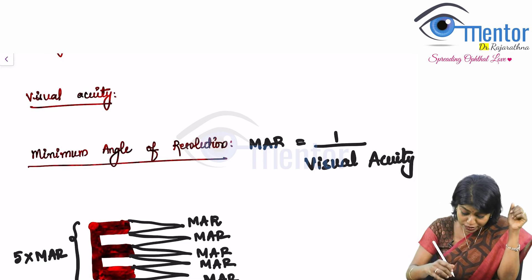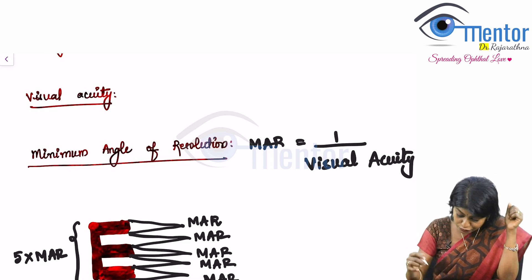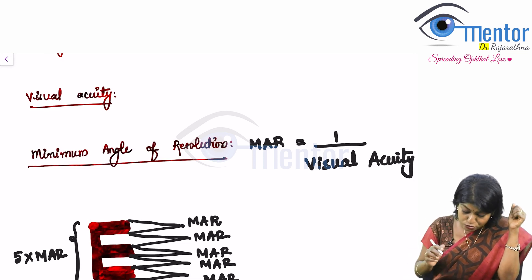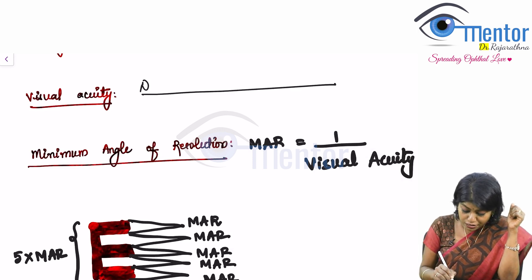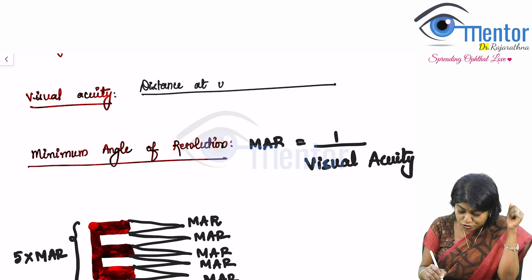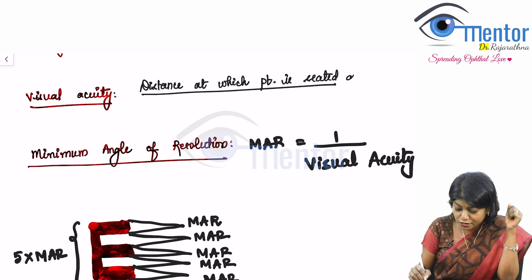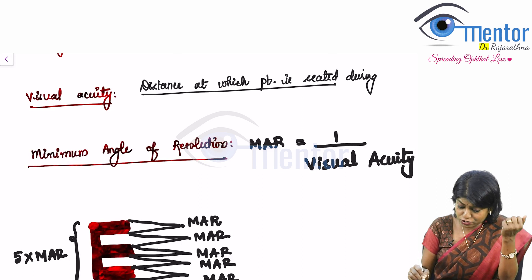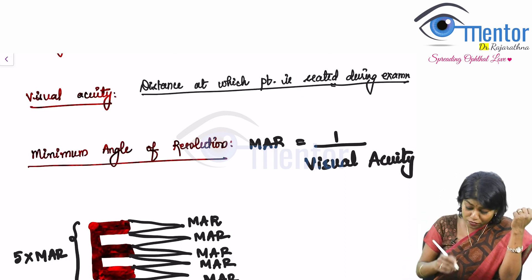Now what is visual acuity? It has a numerator and a denominator if you all will remember. So the numerator is the distance at which patient is standing or seated during my examination, during examination.